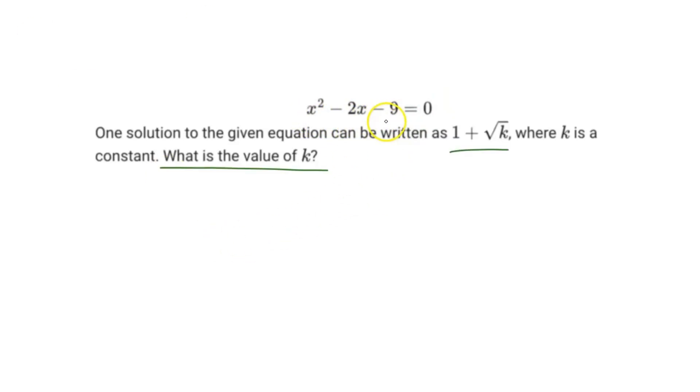If we have x squared minus 2x minus 9 equals 0, let's just rewrite this as x squared minus 2x, and then we'll bring the minus 9 to the other side, so equals 9.